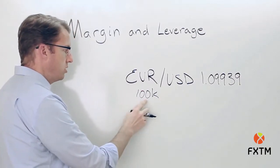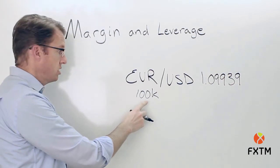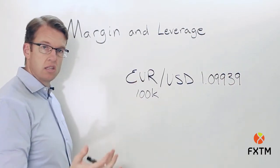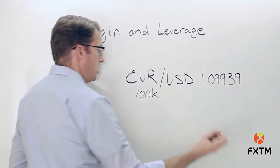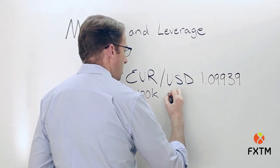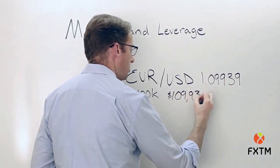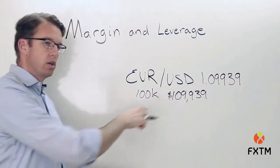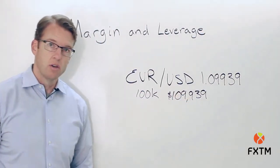All we would have to do is take the notional value in the base currency — so how many units of the base currency does this lot represent — and multiply that by the exchange rate. So we know that in this case, this represents $109,939 of notional currency in the quote currency, here in the US dollar.